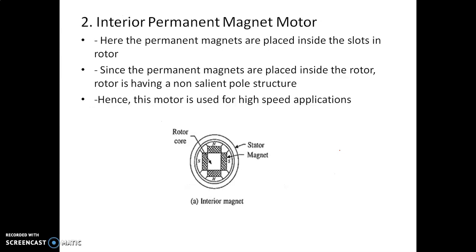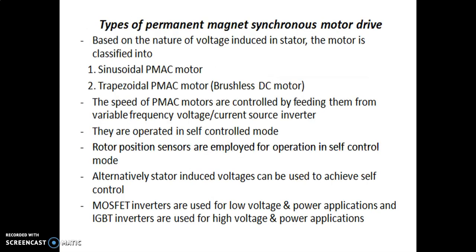The next type is the interior permanent magnet motor. In the interior permanent magnet motor, the permanent magnet is placed in the slot. Since the permanent magnets are placed inside the rotor, the rotor has a non-salient pole structure. The non-salient pole type is used for high speed applications. This is the construction-wise classification of permanent magnet motor drives.